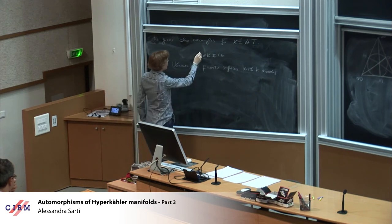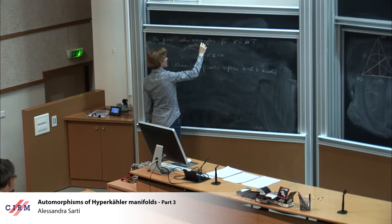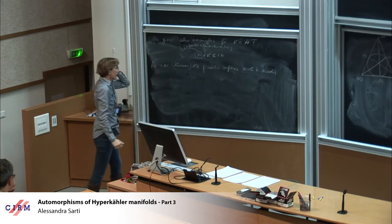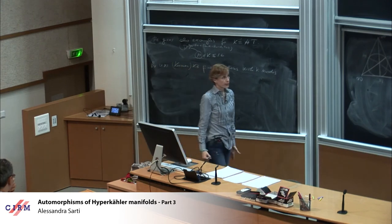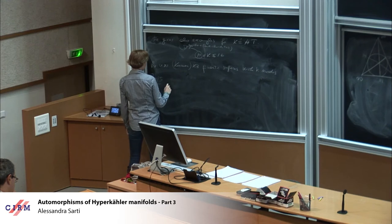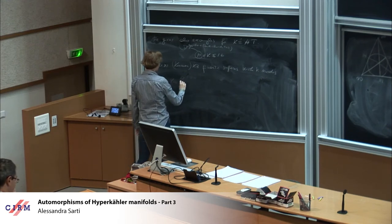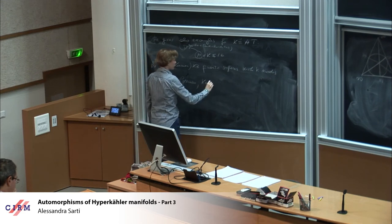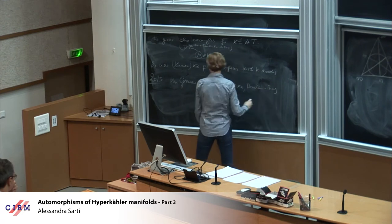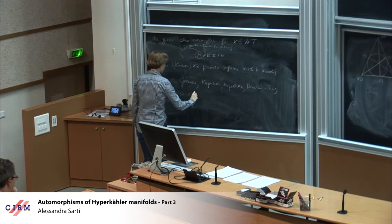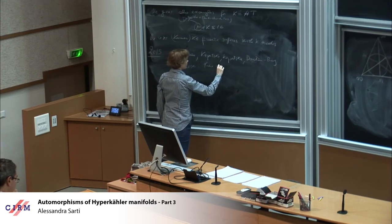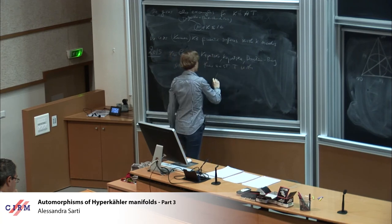And what he does in his paper is then to construct examples to show which cardinalities are possible. So first, yes you're assuming that T is finite, yes. And so he gives all the examples for K between 10 and 16. And to do that, he uses Kummer K3, or let's say more in general, K3 quartic surfaces with K nodes. We start with cardinality of K nodes.